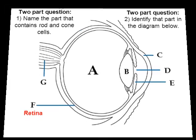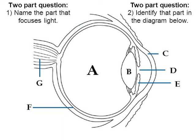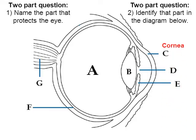Here's another one. Pause the video and try to answer number one and two. Name the part of the eye that focuses light, and then identify it. I hope for number one you said the lens, and you identified it as letter B — B as in boy. Here's another one: name the part that protects the eye and then identify it. I hope you chose the cornea, identified as letter C.